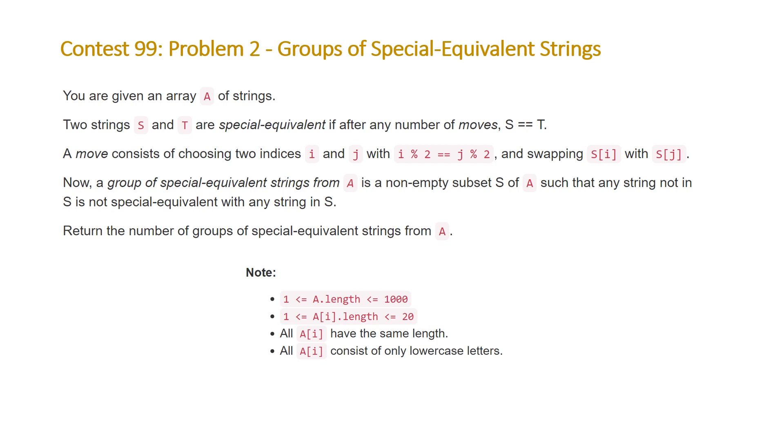Now a group of special equivalent strings from A is a non-empty subset S of A such that any string not in S is not special equivalent with any string in S. Return the number of groups of special equivalent strings from A. Note that the length of our array is going to be between 1 and 1000, the length of each of our strings is going to be between 1 and 20, and all of A[i] have the same length and all characters in each of the A[i]s will be lowercase.